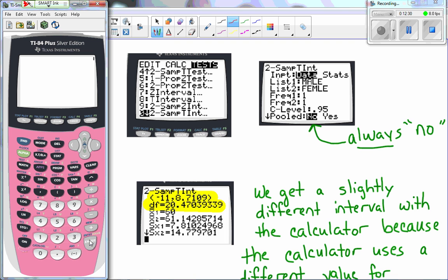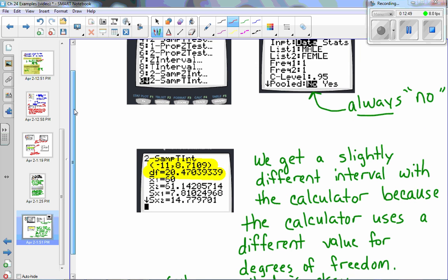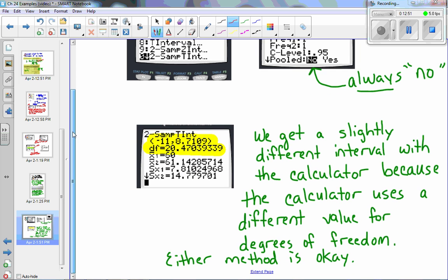Now you'll notice here that we do get a different confidence interval. It's from negative 11 to 8.7. And the reason for that is because notice the degrees of freedom. So again, ours was a conservative estimate, which is why we ended up with a wider interval. This is a little narrow interval. So it is better to use the calculator and to use the degrees of freedom that the calculator comes up with. However, it's okay if you have a situation where you have to do it by hand for whatever reason, then it is okay to use the lesser of the two n minus ones.